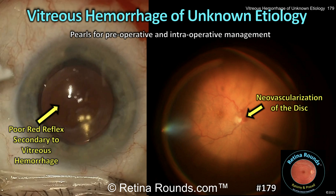Vitreous hemorrhage of unknown etiology. Vitreous hemorrhage can be caused by a wide range of conditions, from retinal tears to proliferative diabetic retinopathy, making it a frequent yet complex problem for retina specialists.